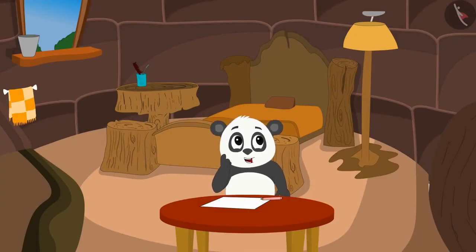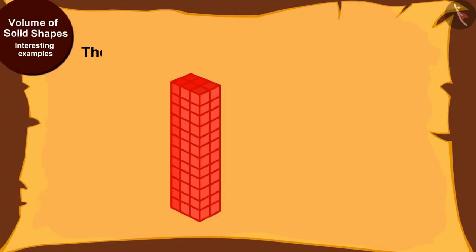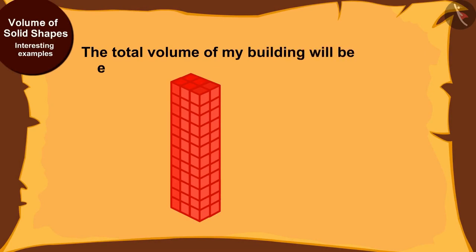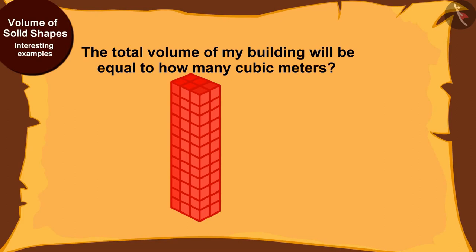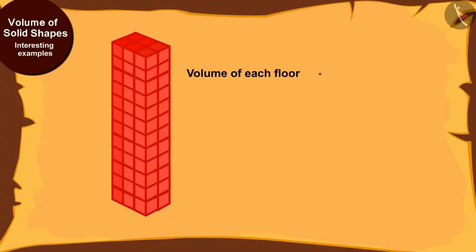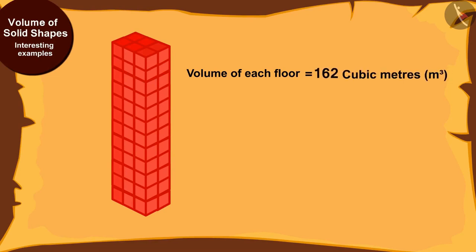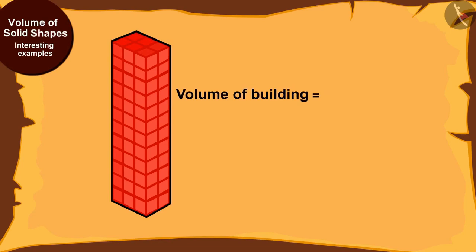And if I make 12 floors in my building, the total volume will be 162 multiplied by 12, that is 1944 cubic meters. Kids, can you help Golu find the answer? Find the answer quickly by stopping the video.